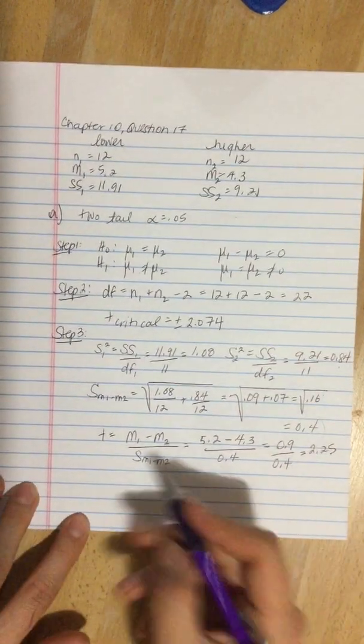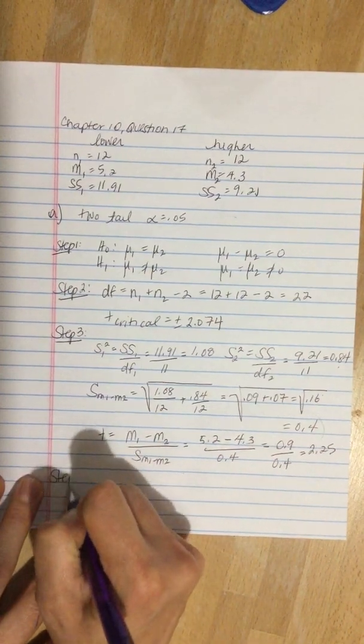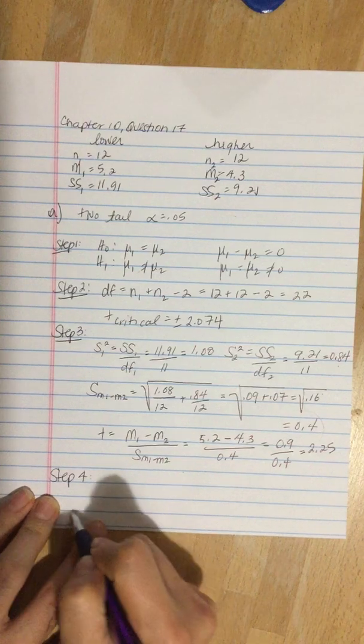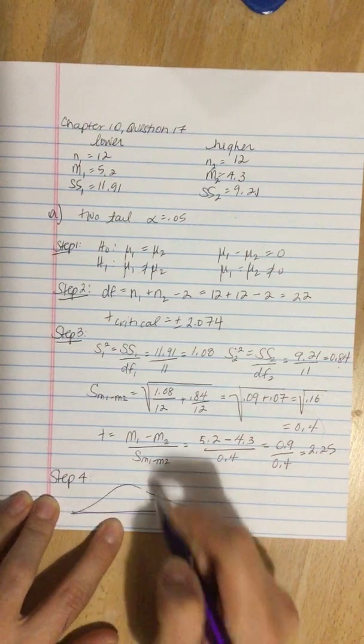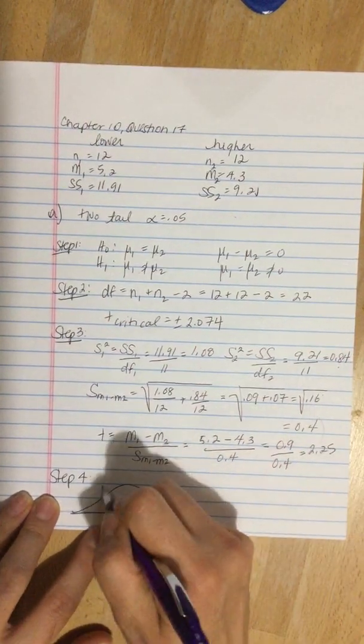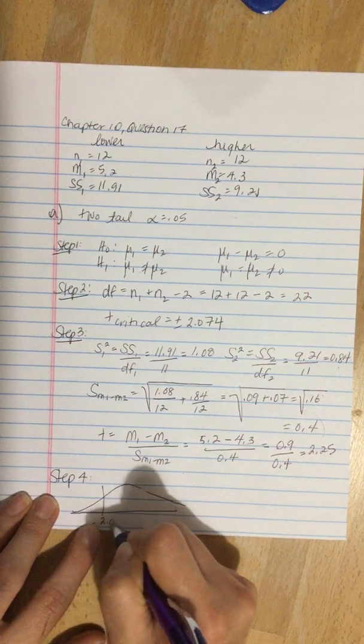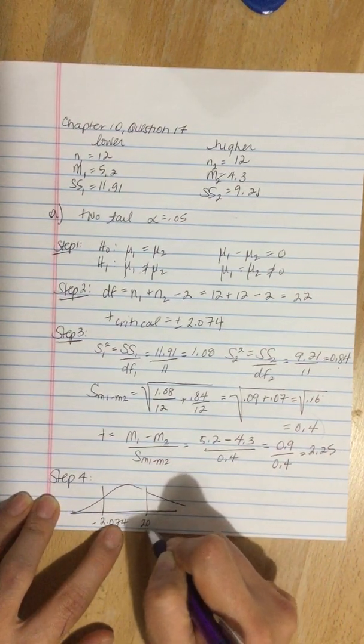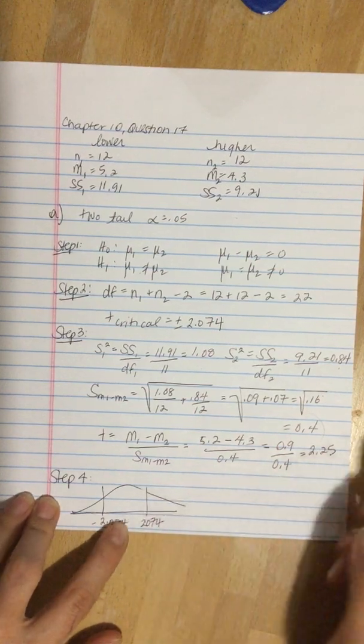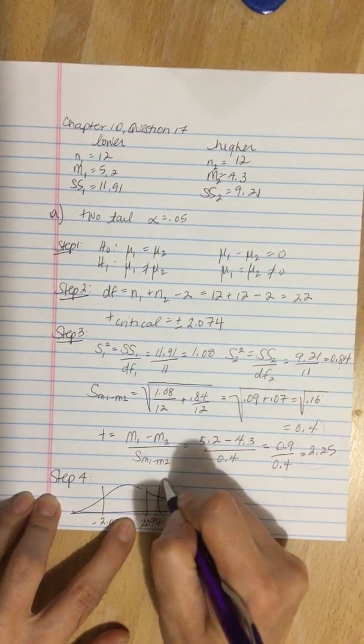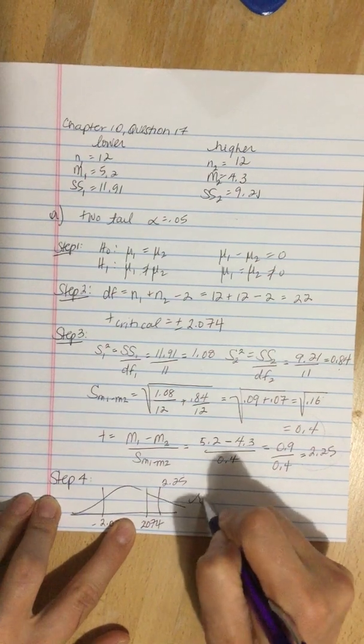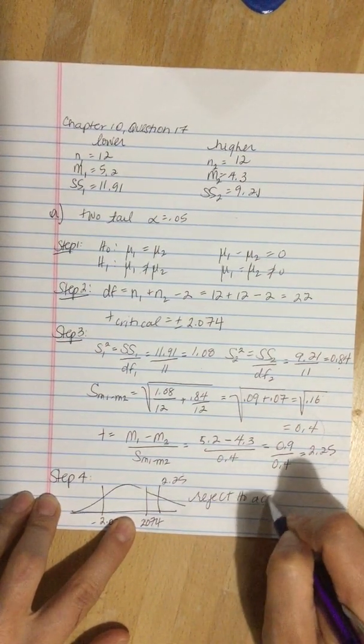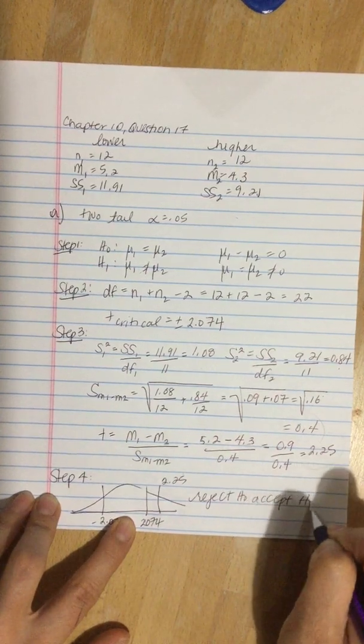Step 4: I'll draw a small normal distribution. Our critical values were minus 2.074 and positive 2.074. This value falls out here, so we're going to reject the null and accept the alternate.